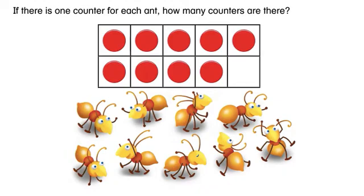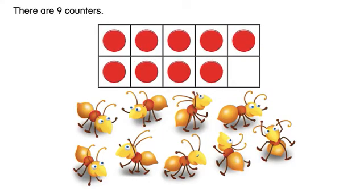If there is one counter for each ant, how many counters are there? There are nine counters.